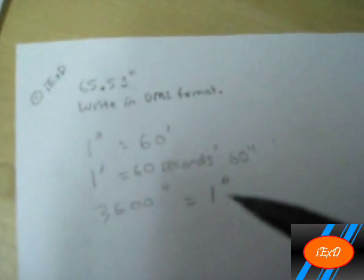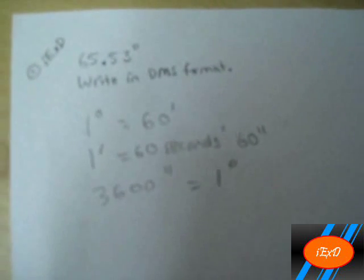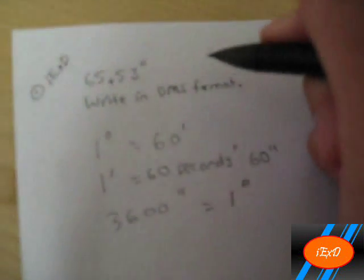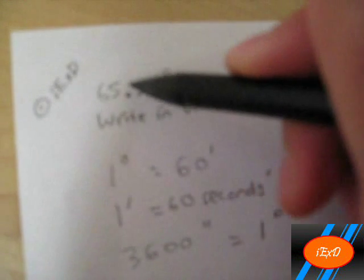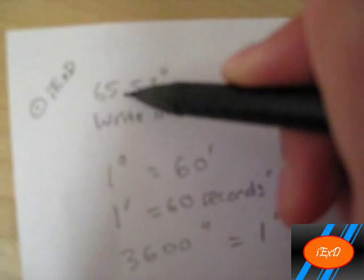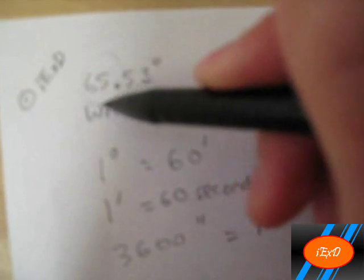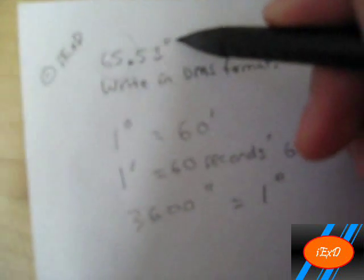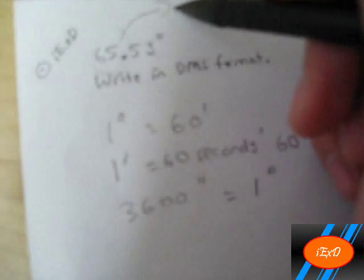Now that we've got that covered, we can move on. Now the first step to do this problem is, the number in front of the decimal, which is right here, is degrees. So you take it out and it becomes 65 degrees.